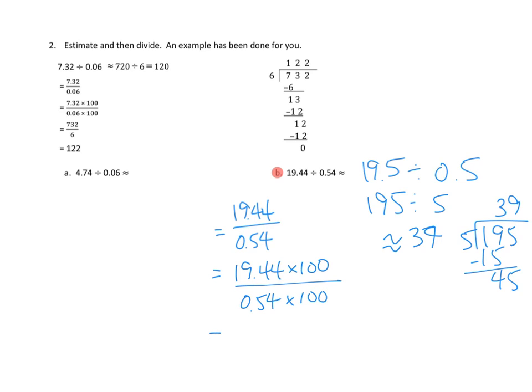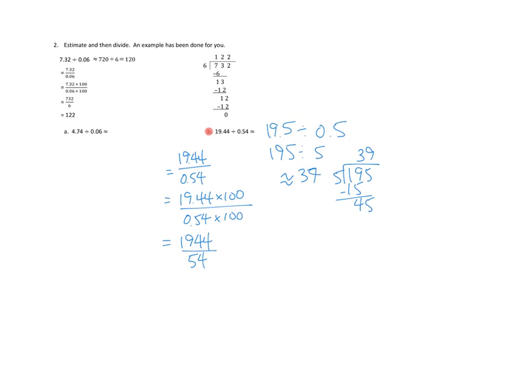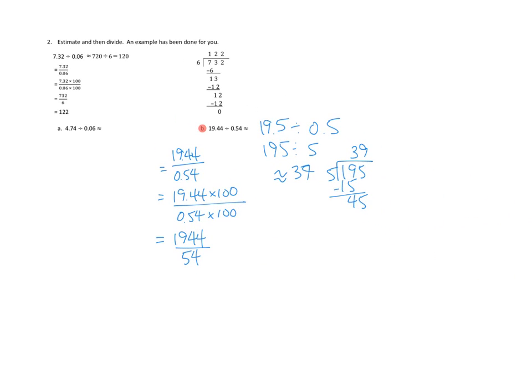And let's go ahead and do that multiplication. 19.44 times 100. We'll just move every number two place values to the left. And we do the same in the denominator. And we end up with 1944 divided by 54. Okay. Well now we're down to division that we can normally handle, right? So let's go ahead and handle that division.